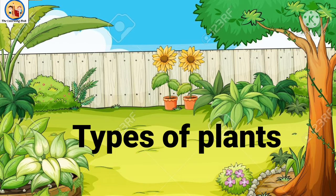In this video today we are going to discuss about different types of plants. Look at this picture — this is a picture of a garden. Here we can see different types of plants. We see a huge variety of plants around us. Do they all look the same? No, there are different varieties of plants, and they are mainly classified based on certain features including appearance, shape, height, and size.